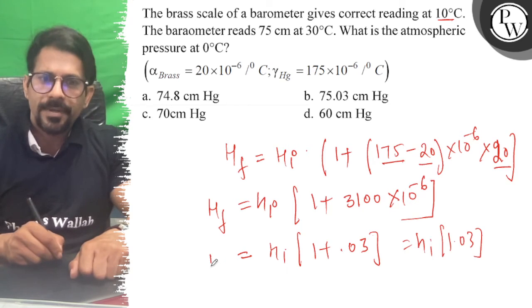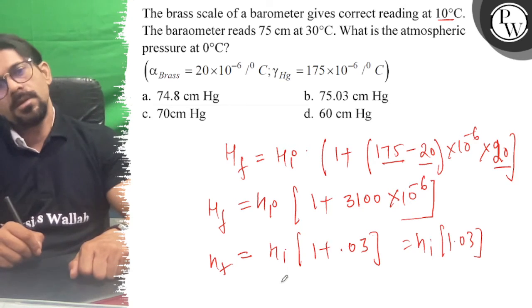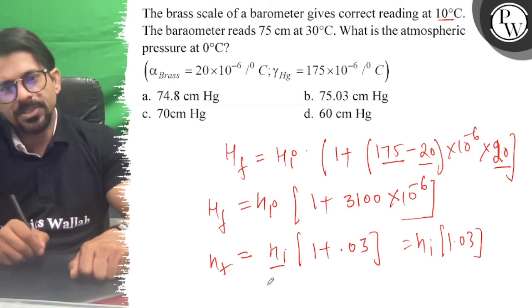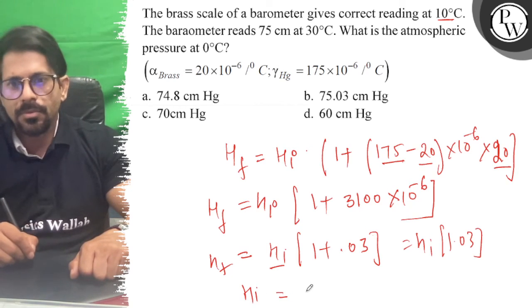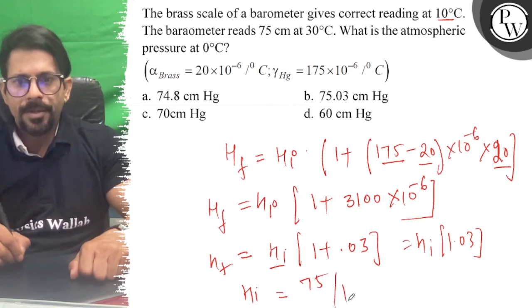And that is equal to what? H final. Okay, so H initial is equal to 75 divided by 1.03.